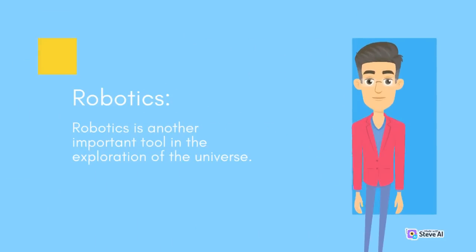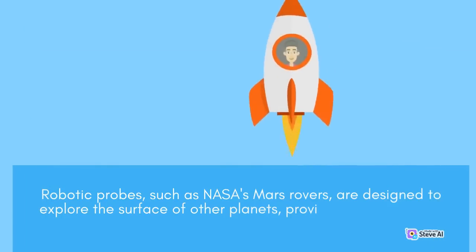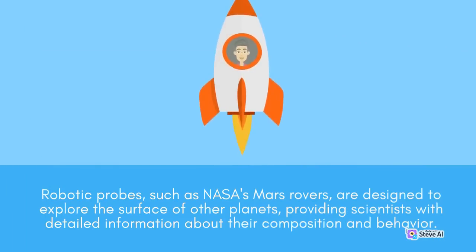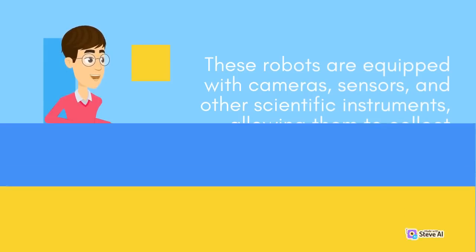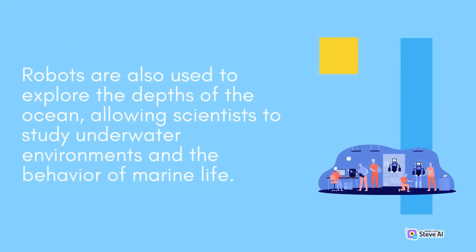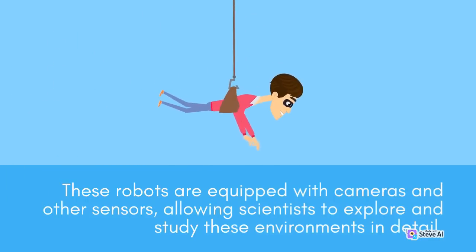Robotics is another important tool in the exploration of the universe. Robots can be used to explore environments that are too dangerous or inaccessible for humans, such as the surface of other planets or the depths of the ocean. Robotic probes, such as NASA's Mars rovers, are designed to explore the surface of other planets, providing scientists with detailed information about their composition and behavior. These robots are equipped with cameras, sensors, and other scientific instruments, allowing them to collect data and perform experiments. Robots are also used to explore the depths of the ocean, allowing scientists to study underwater environments and the behavior of marine life.